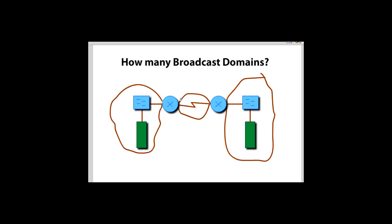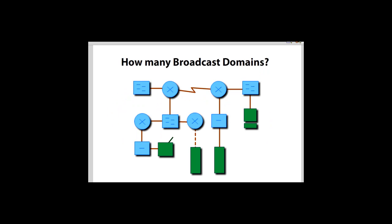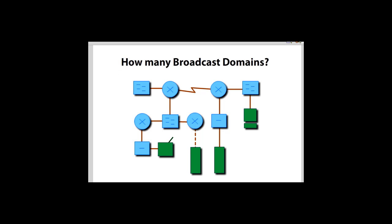What does that mean? It means that these routers are on the same network — they need to be in the same network address space. If this router interface is 10.0.0.1, then the other needs to be 10.0.0.2. So now we can look at the more complex example and answer it correctly.